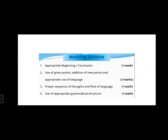The marking scheme for speech writing: appropriate beginning and conclusion gives one mark; using given points, addition of new points, and appropriate use of language gives two marks; proper sequence of thoughts and flow of language gives one mark; use of appropriate grammatical structure gives one mark. Total: five marks. You can score full five marks if you follow this scheme properly.